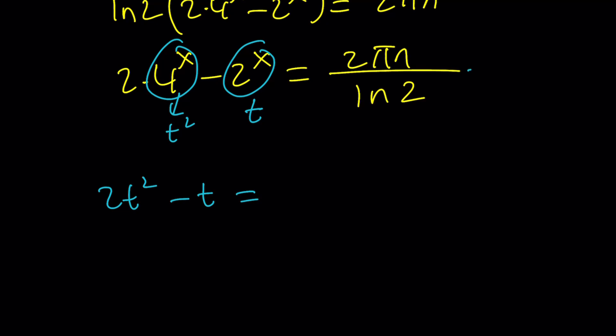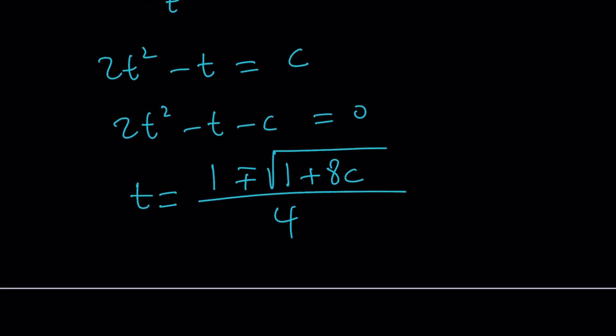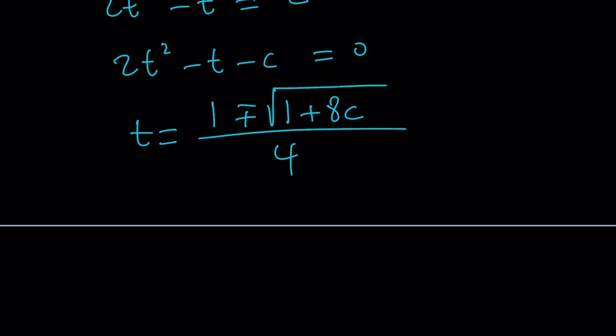Let's call this constant c for now, for simplicity, because I'm going to use the quadratic formula. From here, t equals negative b plus minus the square root of b squared, which is 1, minus 4ac. That's plus 8c. All of that is divided by 4. So that's the t values. t is 2 to the power of x.